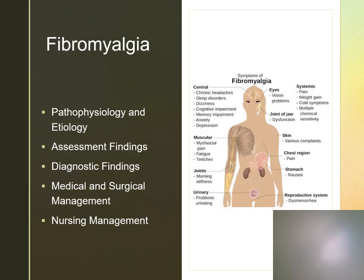Fibromyalgia is a chronic inflammatory illness. The cause is unknown, but these patients do have increased levels of a neuropeptide involved with neurotransmission. They have a low blood flow to the thalamus and low levels of serotonin. It does more commonly affect middle-aged women. These clients will have a chronic syndrome of pain of at least three months with no known cause, fatigue, cognitive issues, and sleep disturbances.